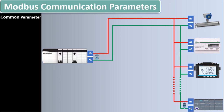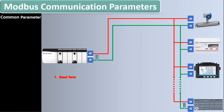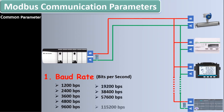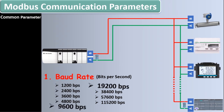Once the wiring is done, the first and most important parameter you must know about Modbus RS485 communication is the baud rate. All devices in the same Modbus loop must have the same baud rate. Baud rate is the rate at which data is transferred on the RS485 network, with a unit of bits per second. Different baud rates range from 1200 bits per second to 115200 bits per second, including 2400, 3600, 4800, 9600, 19200, 38400, and 57600 bits per second. The most commonly used baud rates in Modbus communication are 9600 and 19200 bits per second.